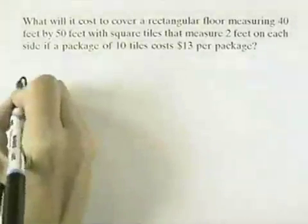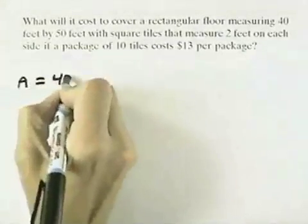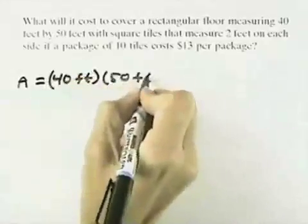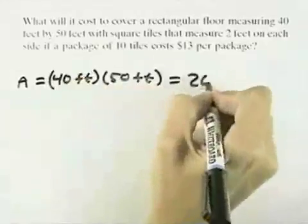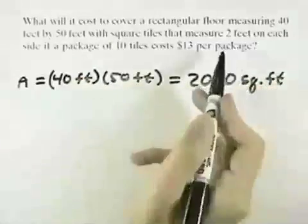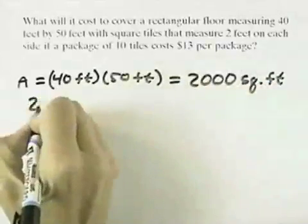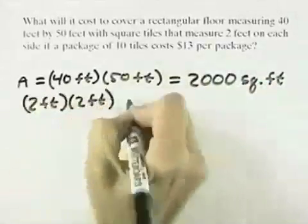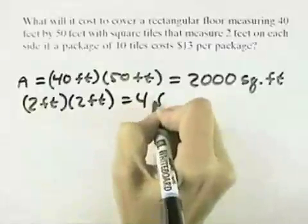Well, what we have for the area that we need to cover is 40 feet by 50 feet, which if we multiply that together, we'll have 2,000 square feet. But the tiles are 2 feet on each side, so they're 2 feet by 2 feet, which is 4 square feet.